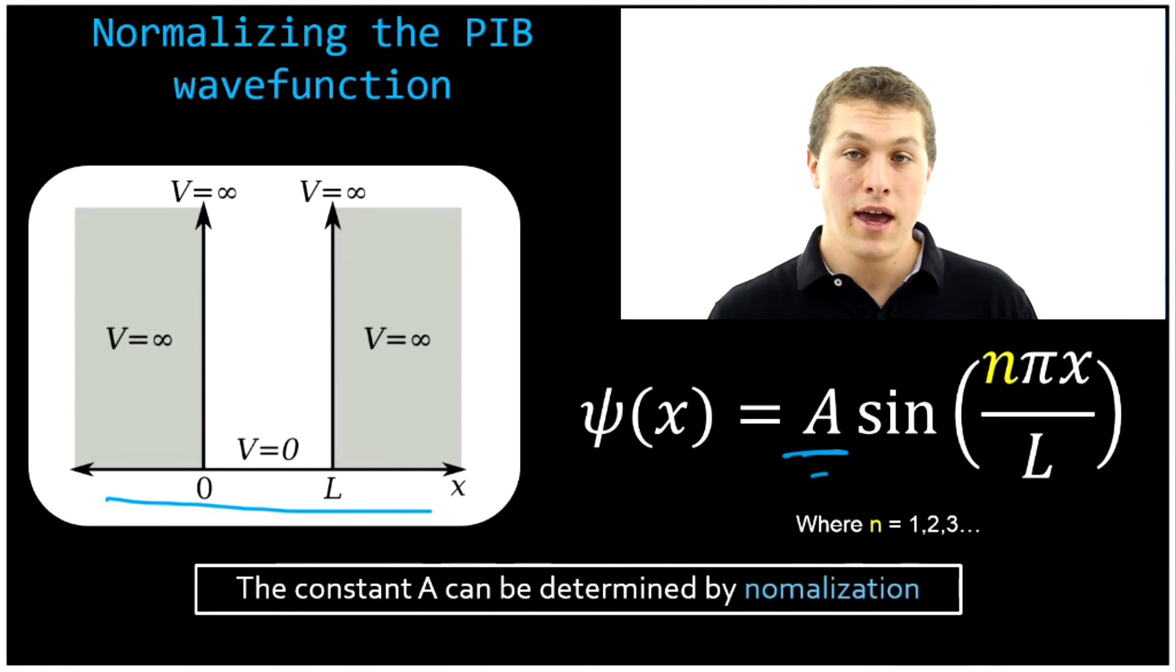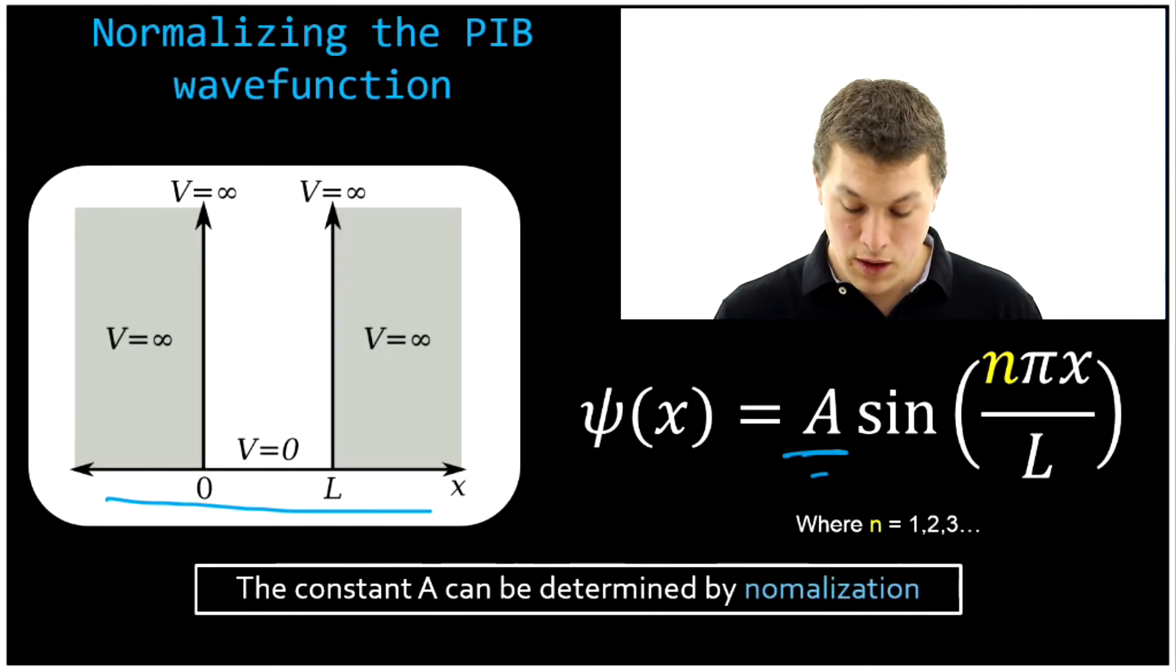The way you get the value of A is by normalizing that wave function. This is a step that's skipped in a lot of derivations because it takes a little time, and you've already been taught how to normalize a wave function. So in this video we're going to show you explicitly how do you normalize this wave function.